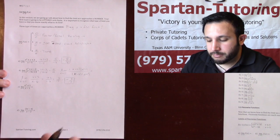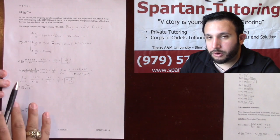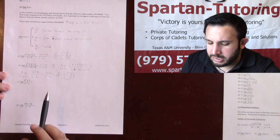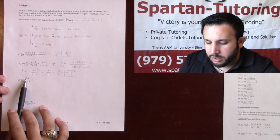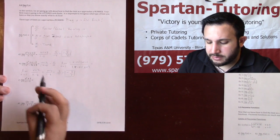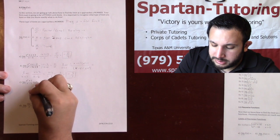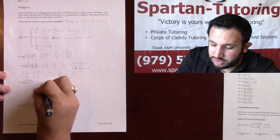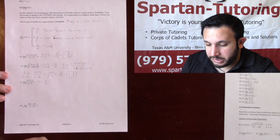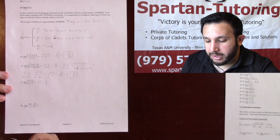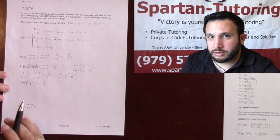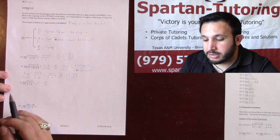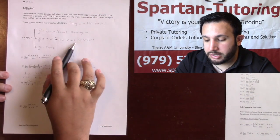Now let's look at example C: the limit as x approaches 1 of (x² + 1)/(x − 1). Plugging 1 in, I get one plus one over one minus one, which is two over zero. That means my final answer will be either positive infinity, negative infinity, or does not exist, so I need to check left and right.